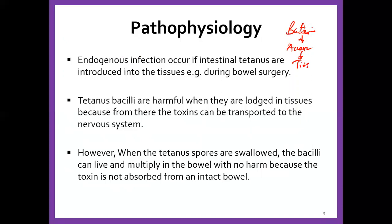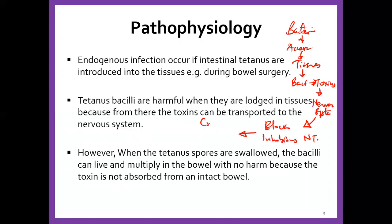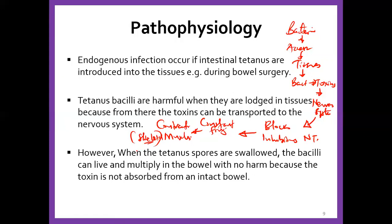In simple terms: the bacteria gains access to necrotic tissues where there's no good blood supply, creating an anaerobic condition. The bacteria then releases toxins that go to the nervous system, blocking inhibitory neurotransmitters, causing constant activation and contraction of skeletal muscles with no time for relaxation — and that's why you end up having the status of tetanus. The tetanus toxins do not act on smooth muscle, only skeletal muscles. When spores are swallowed, the bacteria can live and multiply in the bowel with no harm because the toxin is not absorbed from an intact bowel.